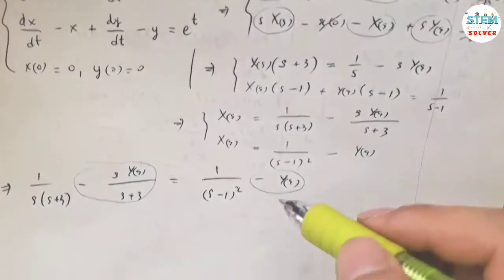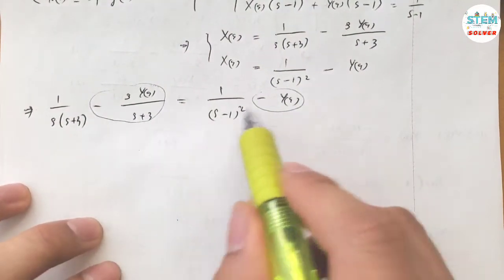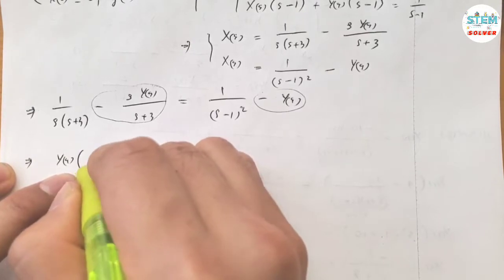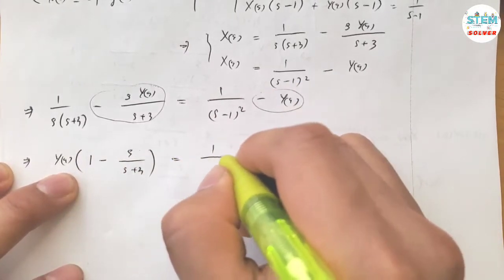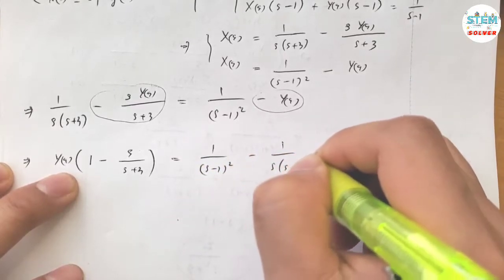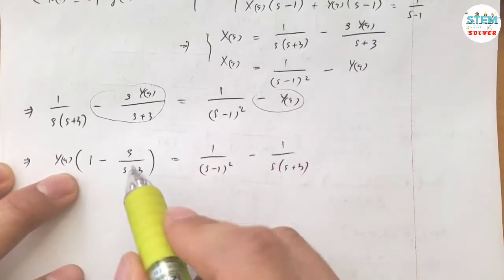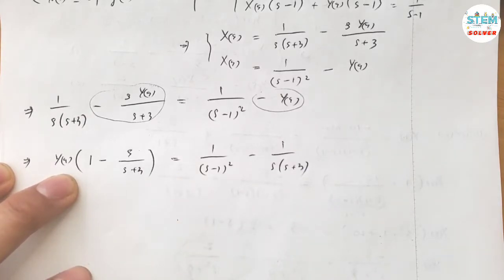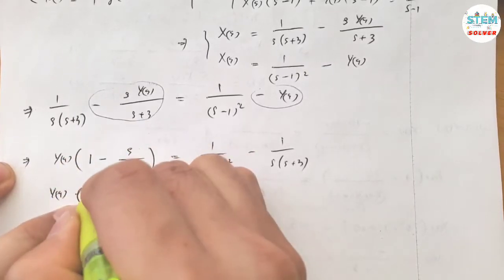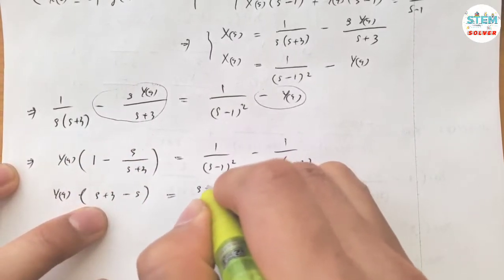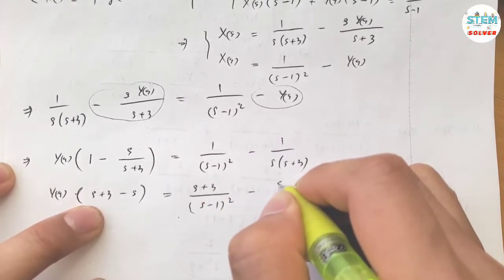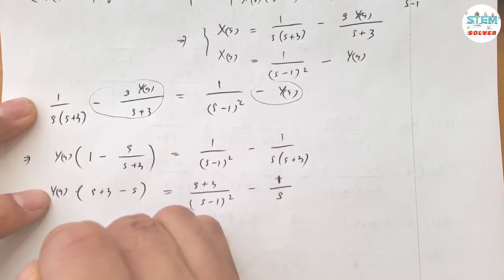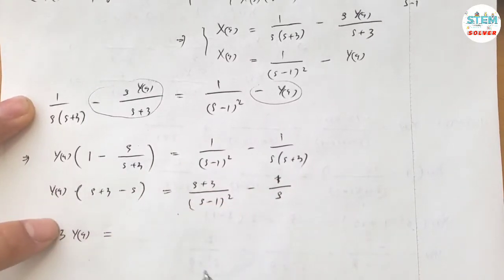Move this to one side and factor out. So I'm going to move this to the left side and factor out. Now multiply the top and bottom by S plus 3 to get rid of the fraction.